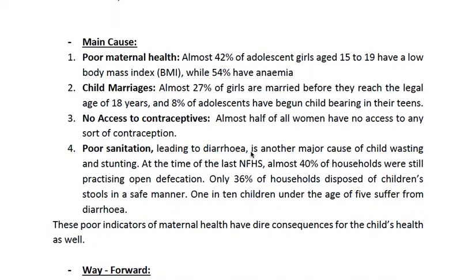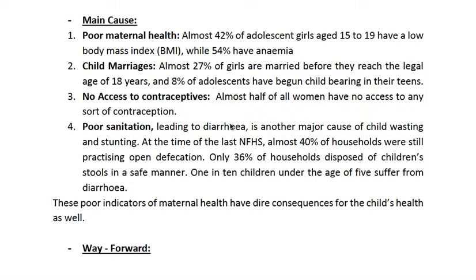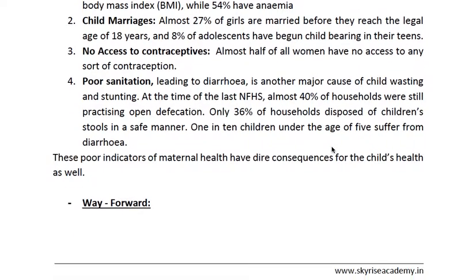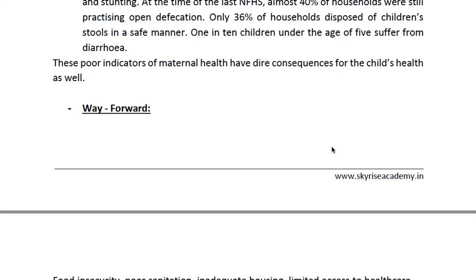In India, women have one of the highest ratios of being anemic, meaning low iron in their blood. There is also a lack of awareness about contraceptives, and even when women are aware, there is often no access to them. Additionally, poor sanitation is one of the major causes of child wasting and stunting, with very grave consequences on children's health.